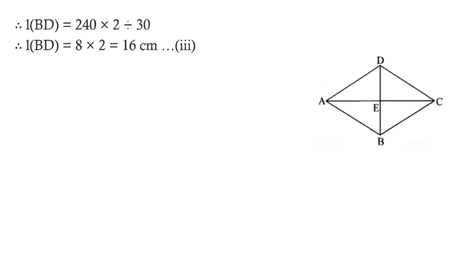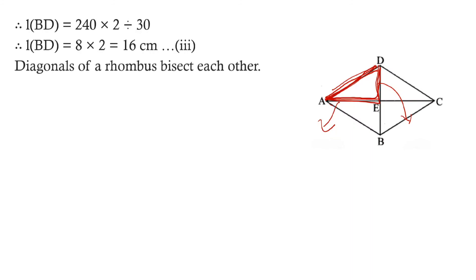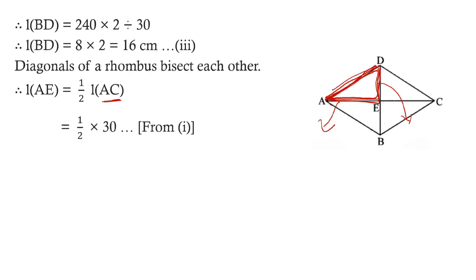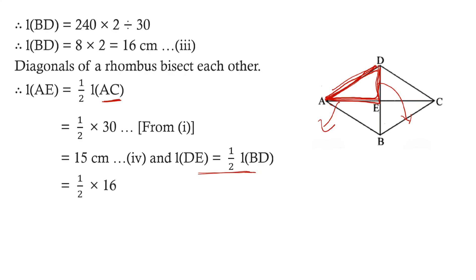To find the perimeter, which equals 4 into side, we first find the length of AD. Since diagonals bisect each other, AE equals half of AC equals half of 30 equals 15 centimeters, and DE equals half of DB equals half of 16 equals 8 centimeters. Now we can find AD by applying the Pythagorean theorem in triangle AED, where angle AED is 90 degrees because the diagonals of a rhombus are perpendicular to each other.